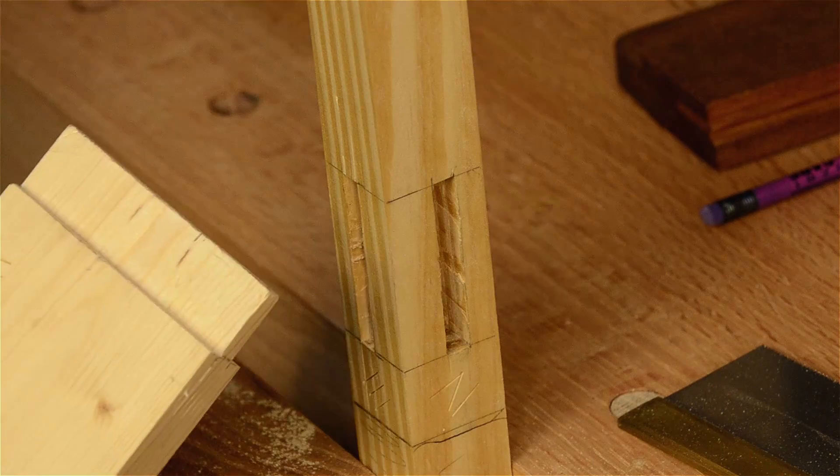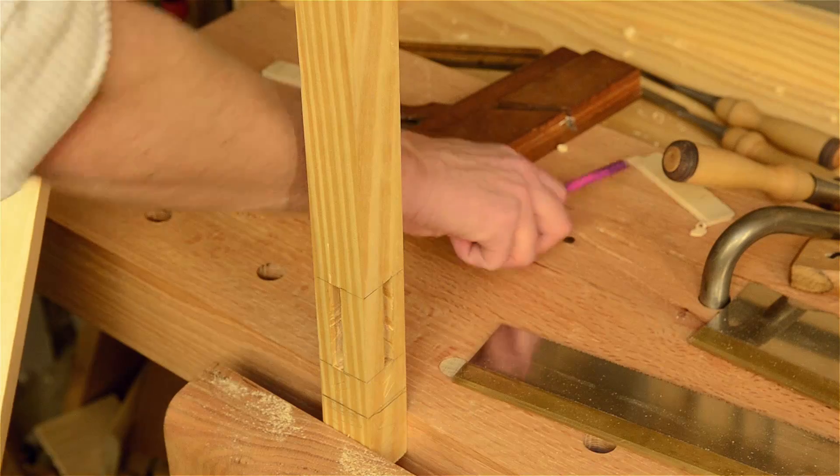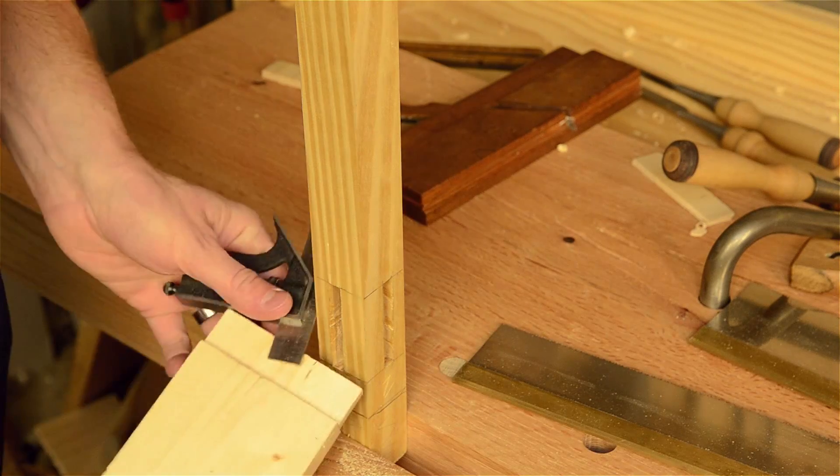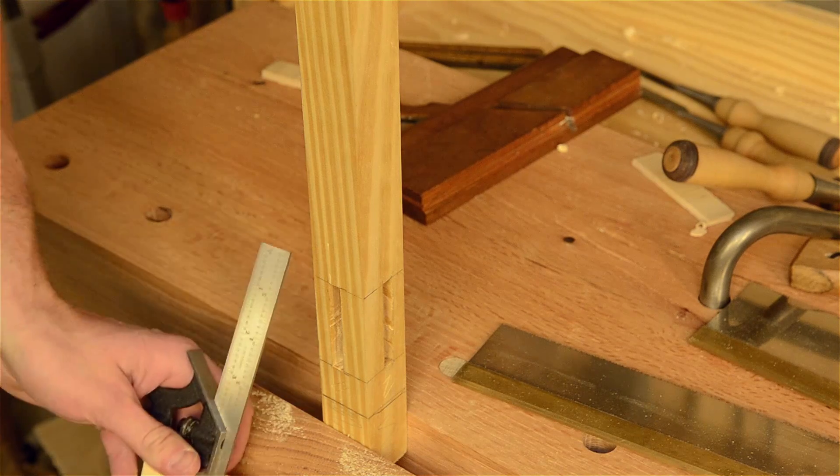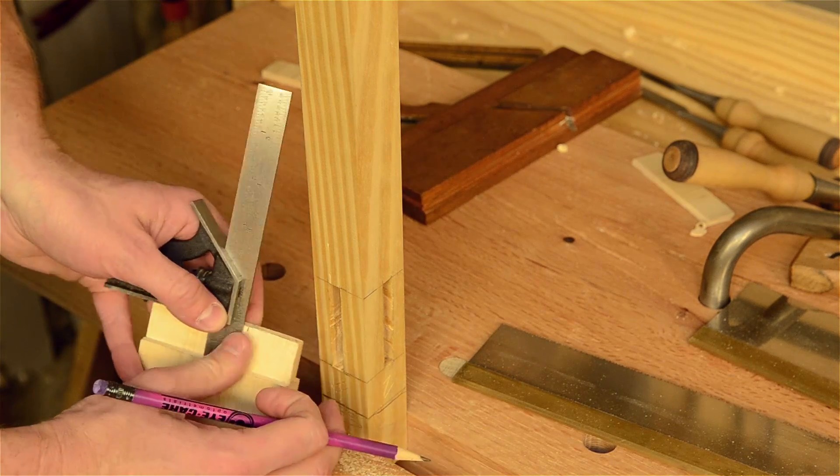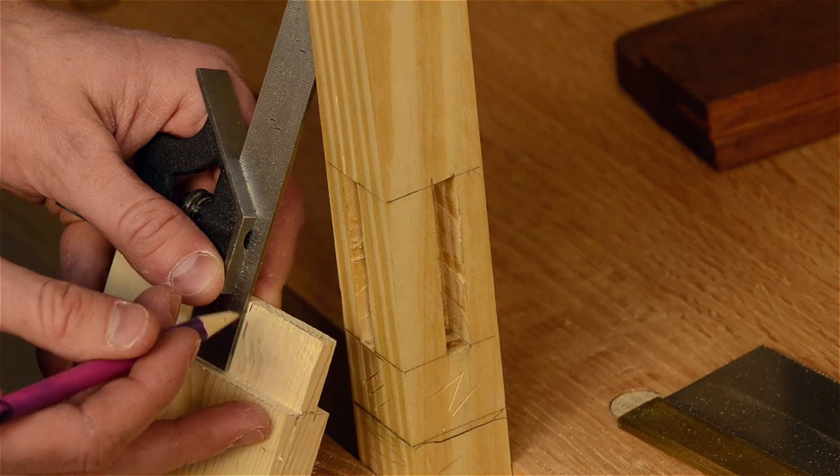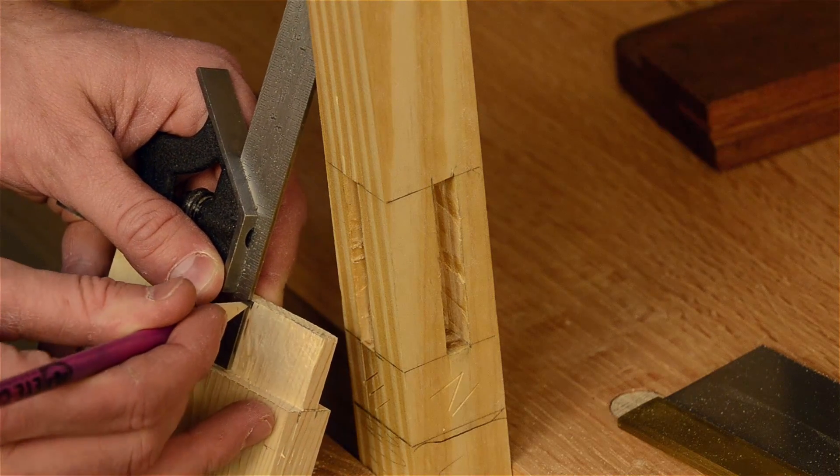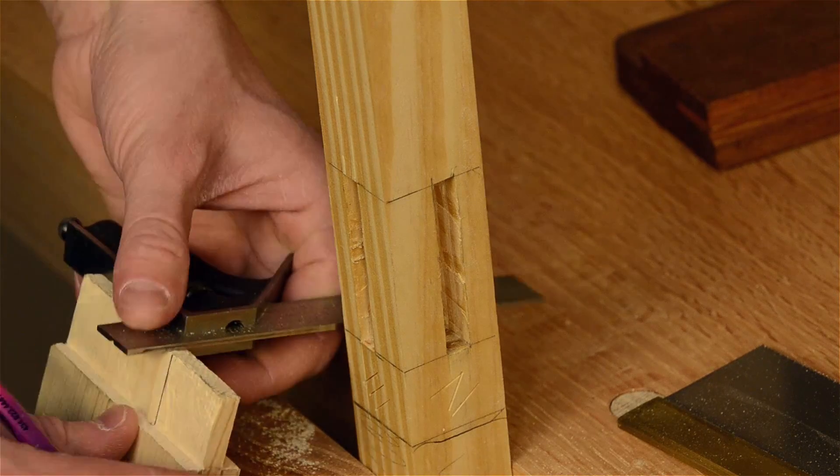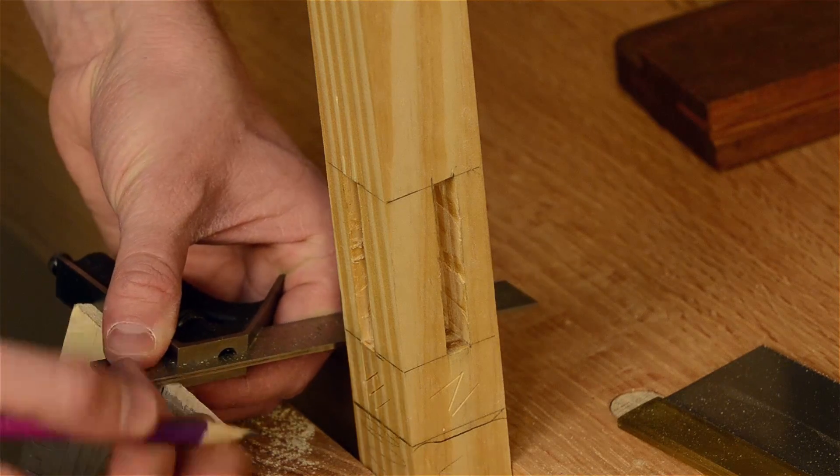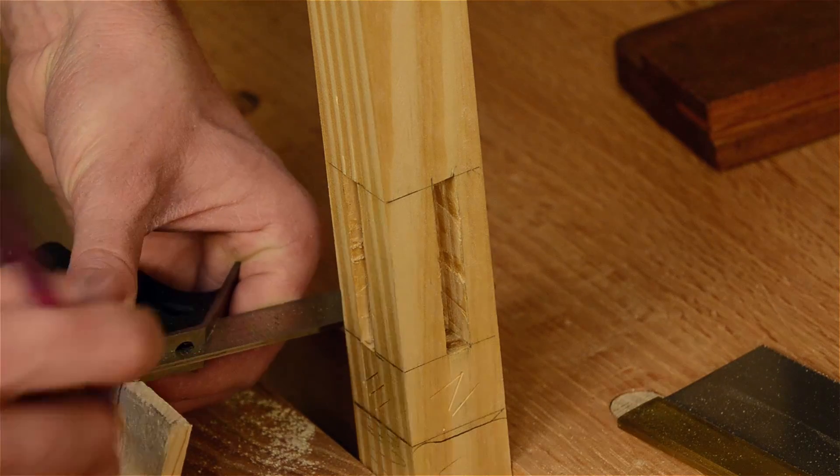And then what I do is I take a nice accurate square. I guess this doesn't have to be an incredibly accurate measurement because you can pare it off. But I draw that there and then one across the top.